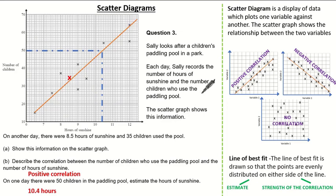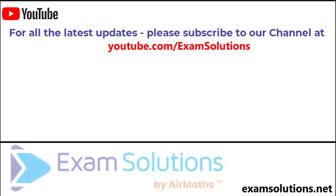In summary, we've gone through what a scatter diagram is and the different types of correlations. We've also looked at the use of a line of best fit, where we use it to identify the strength of the correlation and also make estimates, ensuring that we show our working lines. If you liked this video, please give us a thumbs up, leave your comments down below, and subscribe to this channel so you'll be the first to know when we release our next videos.